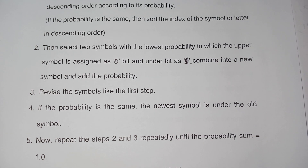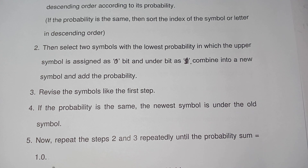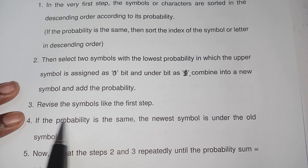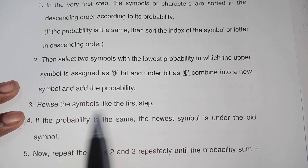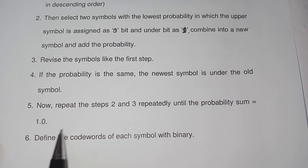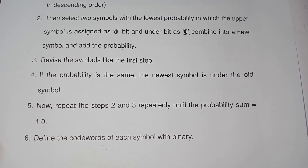For example, if there is an existing symbol with probability 0.4 and you add two symbols to get a new probability of 0.4, the new symbol should come above the existing one. Then repeat steps two and three until the sum of probabilities equals one. The last step is to define the code word for each symbol in binary.